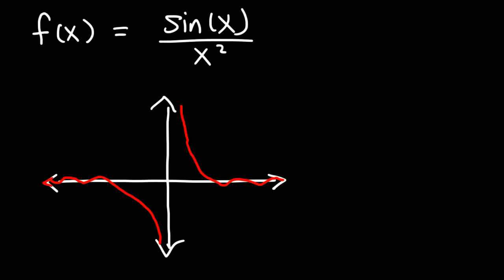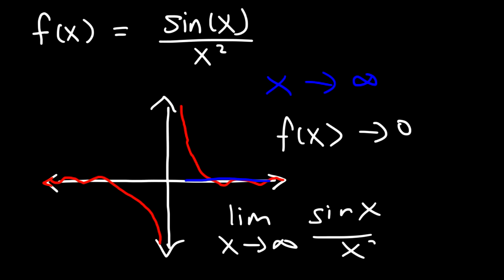But the net effect is that as x approaches infinity, as you travel towards the right on the x-axis, notice that the curve approaches the x-axis. So the function f of x approaches 0. So the limit as x approaches infinity for sine x over x squared is equal to 0.